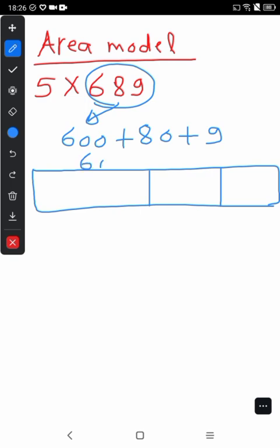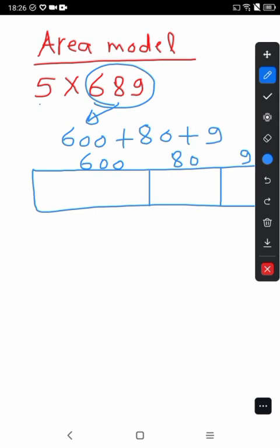Part one is 600, part two is 80, and part three is 9. Here we will write 5. Next step, we will multiply.